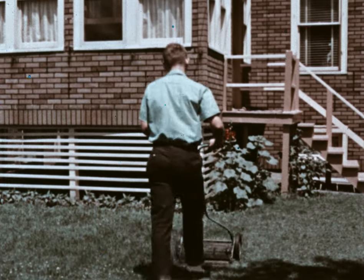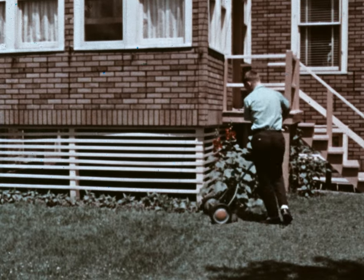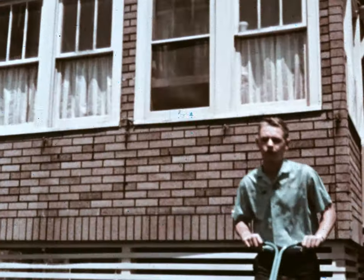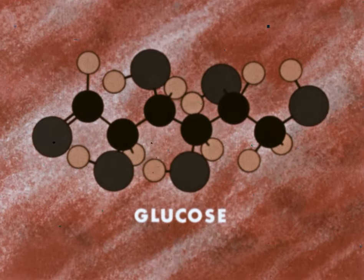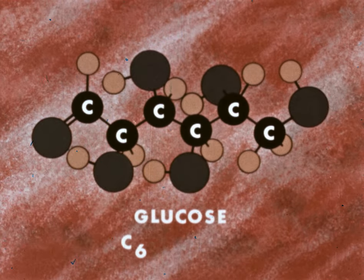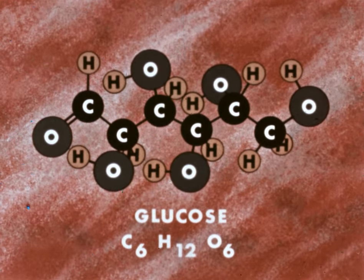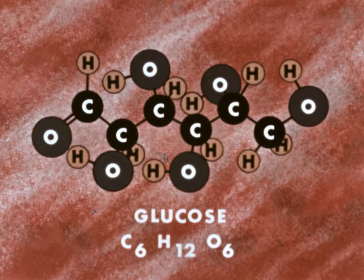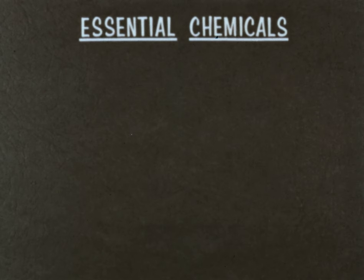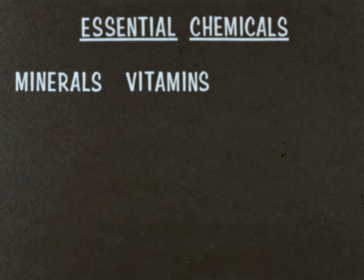So far, we've related nutrition and metabolism to body energy. But body metabolism involves more than producing energy. Proper metabolism in any of the body's cells depends upon a wide variety of chemicals. Many of these chemicals are manufactured by the body from elements contained in molecules such as glucose, which result from the digestion of energy producing nutrients. But certain chemicals essential to the body cannot be manufactured from these elements. These are essential chemicals which must be present in the diet — they include minerals, vitamins, and amino acids.